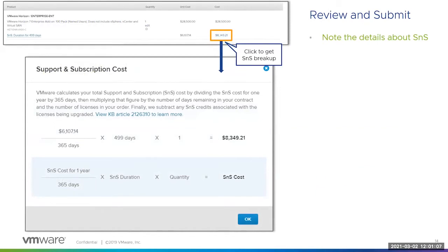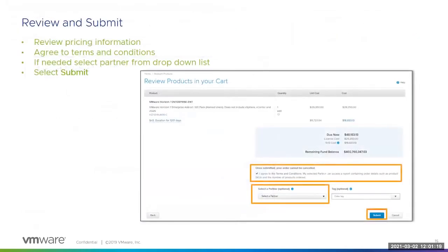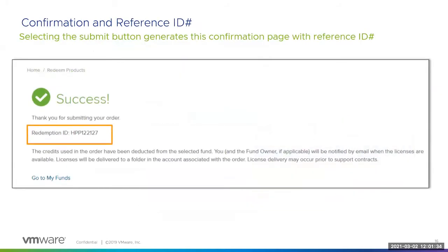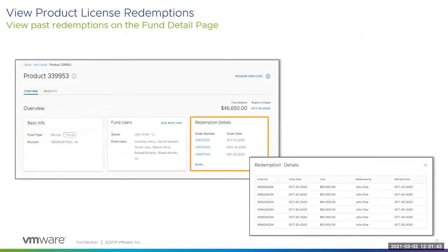There are two hyperlinks on the Review and Submit page which provide additional information about how the SNS pricing is formulated. When you're ready, scroll down and select the Submit button. To complete the order, review the pricing information, select the checkbox to agree to the terms and conditions, and if applicable, select a partner from the drop-down list. Then select the Submit button. You know your order was successfully submitted when you see the confirmation message. Make a note of the redemption ID number for your records. You can always view product redemptions on the Fund Details page under the Redemption Detail tile.